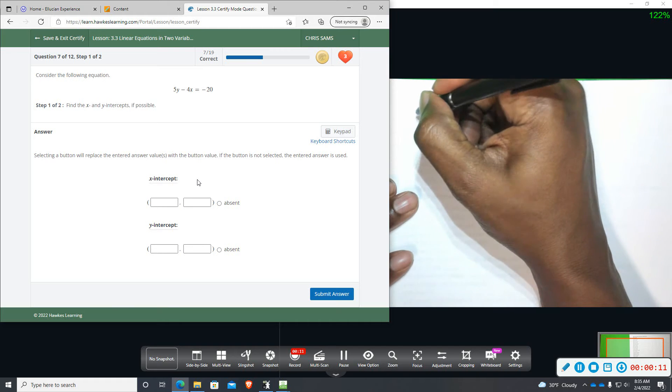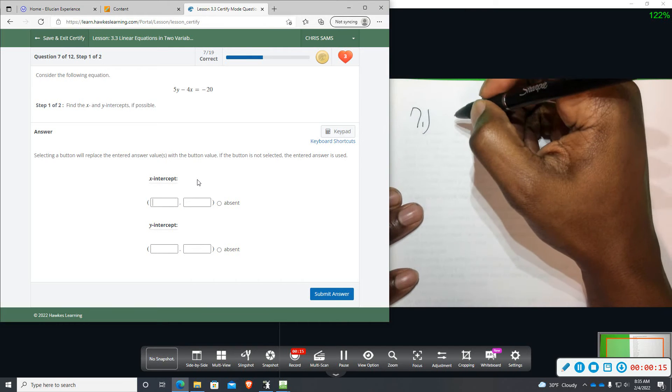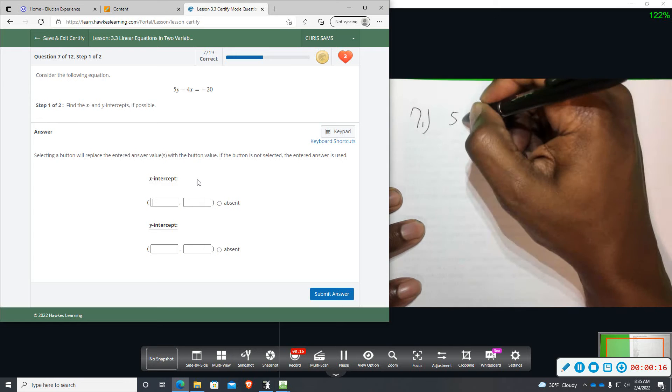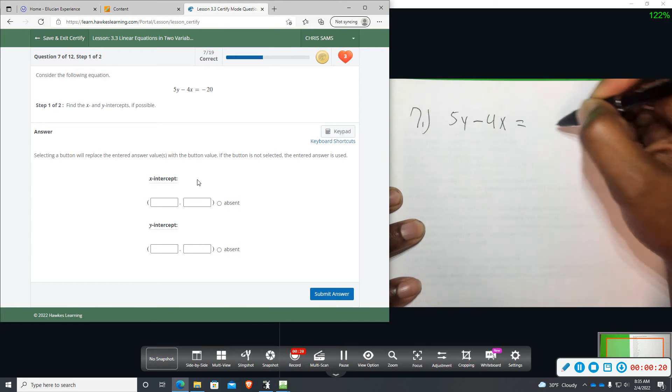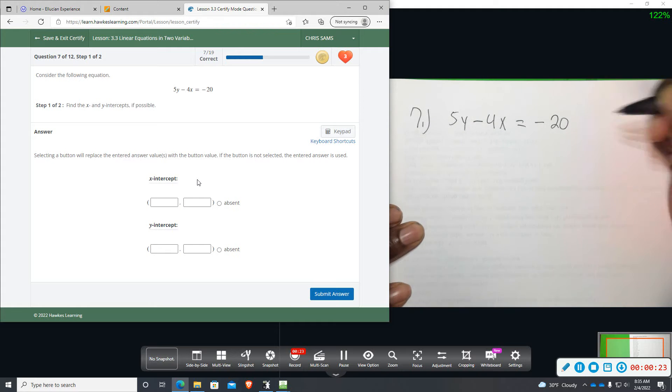So we're going to start out with 5y minus 4x equals negative 20.